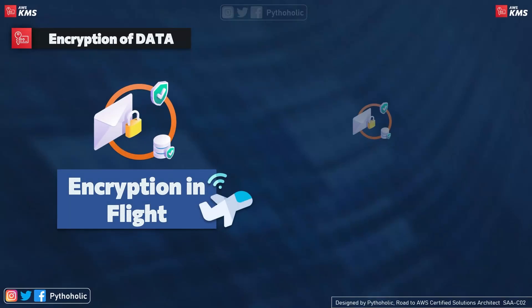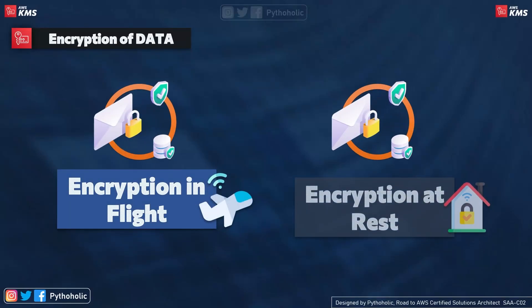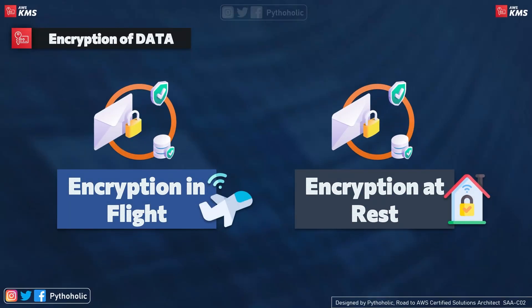Let's come back to the types of encryption and why they are important. The first one is encryption at rest and the other one is encryption in flight. You need to understand why these are important because when you work on the security aspects of the data as an architect, you need to think carefully about the most feasible ways to implement them.